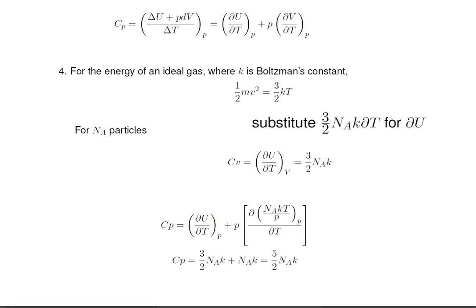Also for CP, we have delta U over delta T at constant pressure, plus the second term that you see here, which is pressure times delta V over delta T at constant pressure, where I have substituted the ideal gas law in terms of Boltzmann's constant for volume.